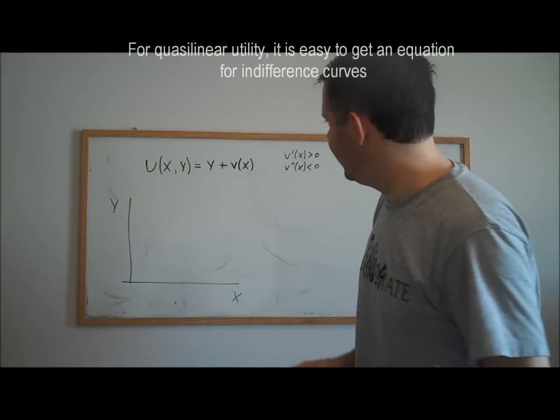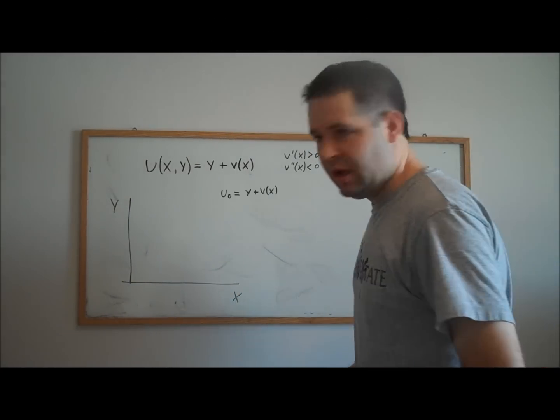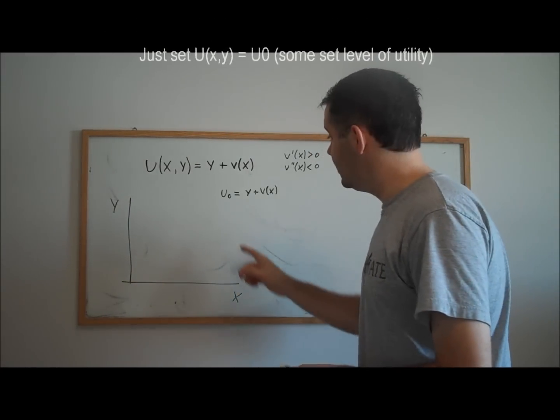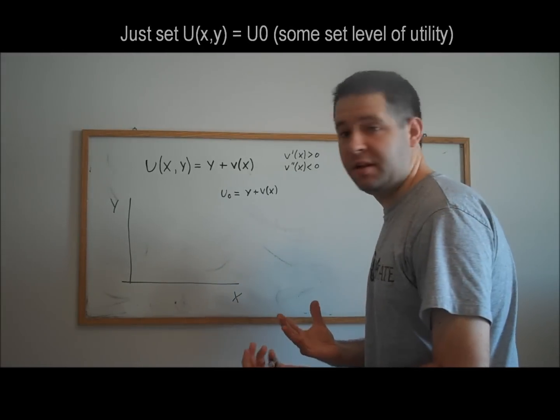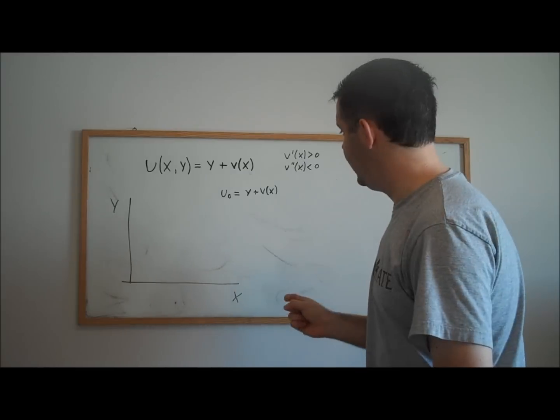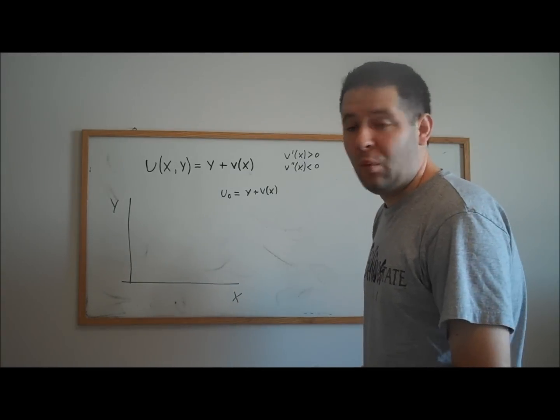Now suppose we wanted to get an indifference curve for this utility function. All we need to do for an indifference curve is specify a set level of utility, because remember an indifference curve tells you points of equal utility. And now we can just solve for y.